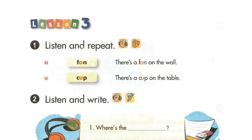Page 28, Lesson 3, Activity 1. Listen and repeat. A. Fan. There's a fan on the wall. A. Cup. There's a cup on the table.